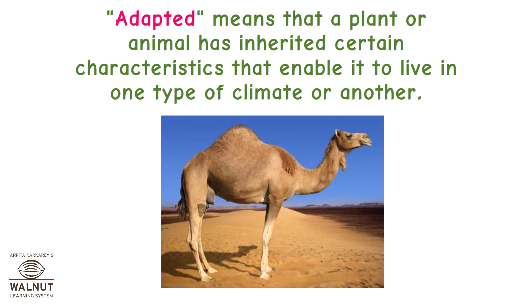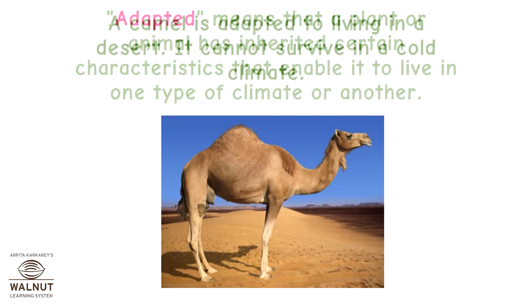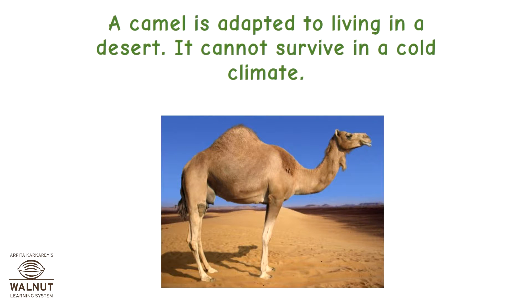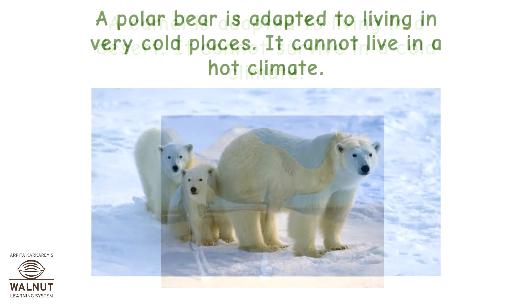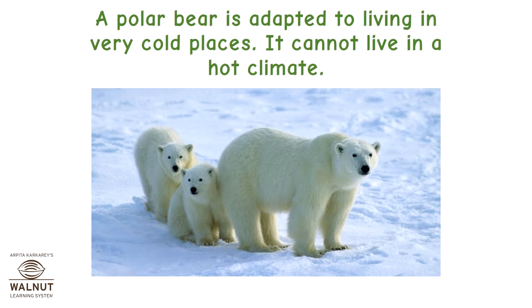Adapted means that a plant or animal has inherited certain characteristics that enable it to live in one type of climate or another. A camel is adapted to living in a desert and cannot survive in a cold climate. A polar bear is adapted to living in very cold places and cannot live in a hot climate.